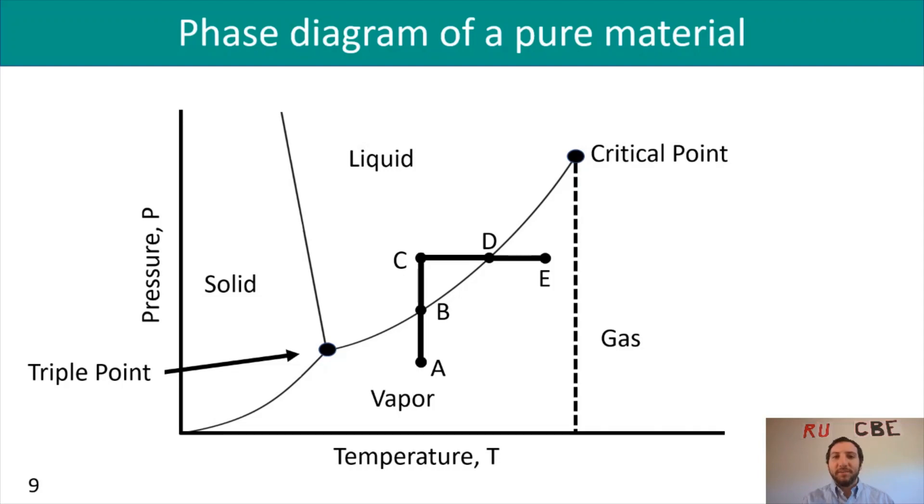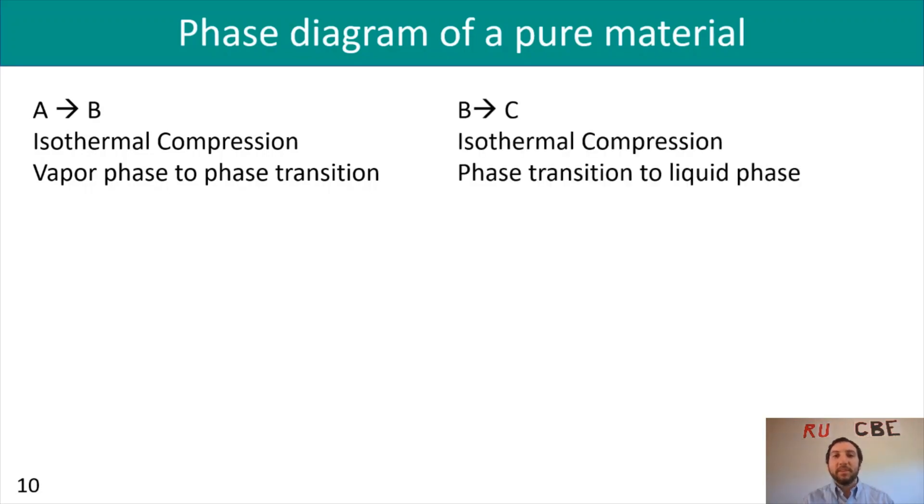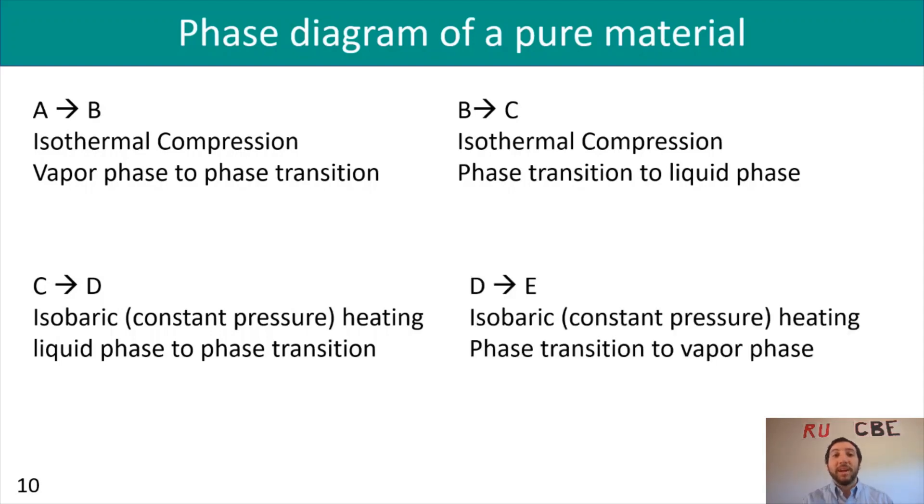Just to recap on those different steps that I just went through on the phase diagram: if I go from A to B, I'm going from a vapor to the phase transition, and that's called isothermal compression. If I go from B to C, again I'm doing isothermal compression, we've got a phase transition to a liquid phase. If I go from C to D, we're doing isobaric, so constant pressure heating, going from a liquid phase to phase transition. Lastly, if we go from D to E, we're doing isobaric, constant pressure heating, and going from a phase transition to a vapor phase.